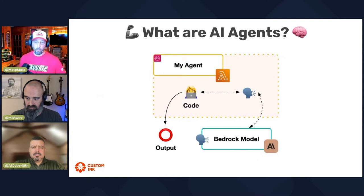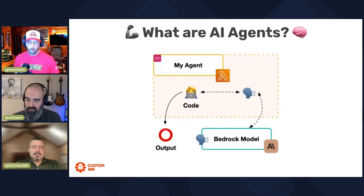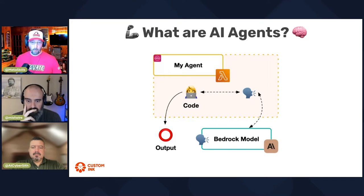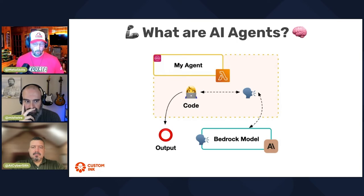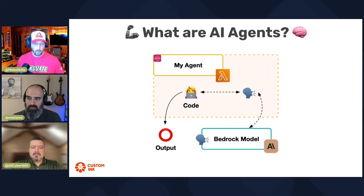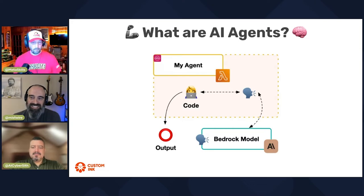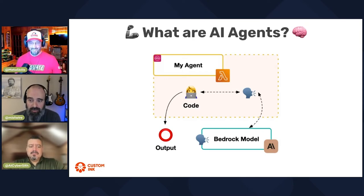I'll show some real-world examples from Custom Ink. I'm going to be talking about Lambda with code inside of it. These Lambda functions will have some form of output — whether that's an orchestration to call another Lambda function from the output of an LLM call. If you've got a piece of code talking to a large language model and outputting something — congratulations, you have an agent. It's that simple. It's so simple, I made one.